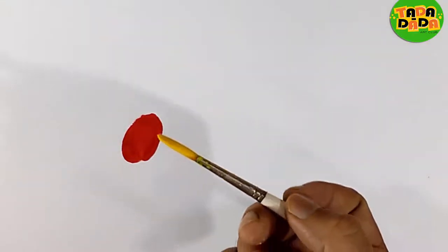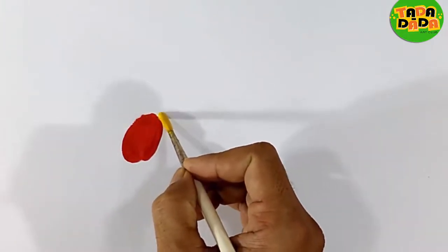Next, what we're going to do is we are taking a yellow color and exactly beside this red color you have to paint the yellow color. Very carefully you have to keep the thickness more or less the same.